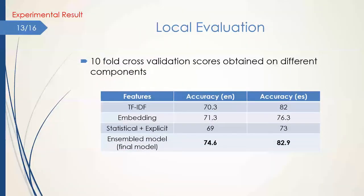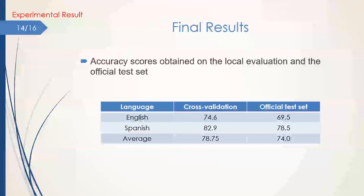In this slide, we compare the performance of the assembled model with each individual component. On both languages, the assembled model performed better based on the 10-fold cross-validation average accuracy on the training data. Finally, this is our performance on the official test set in comparison with our local evaluation on the training set. We obtained an average accuracy of 74%, with 69.5% on English and 78.5% on Spanish.